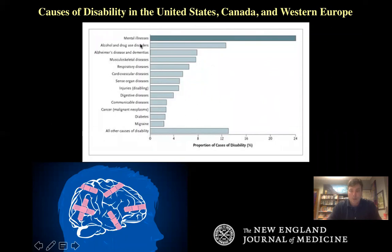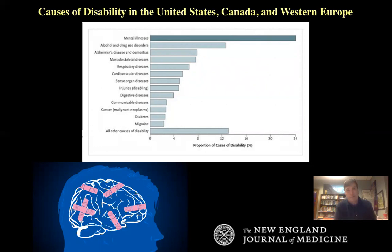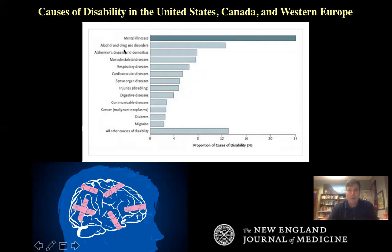Depression is the number one most prevalent psychiatric diagnosis, and anxiety is closing that gap. Mental illness is the number one cause of disability in the United States, Canada, and Western Europe — and very likely the number one cause of student disability on college campuses, as measured by students unable to attend class, complete assignments, or fulfill their responsibilities. If I can't fulfill my role as a professor because of depression or bipolar disorder, then I'm disabled.